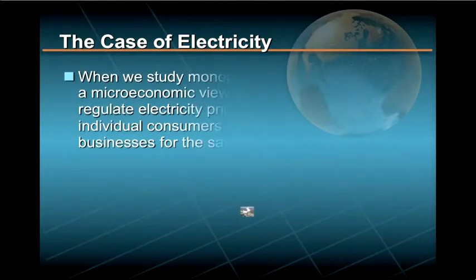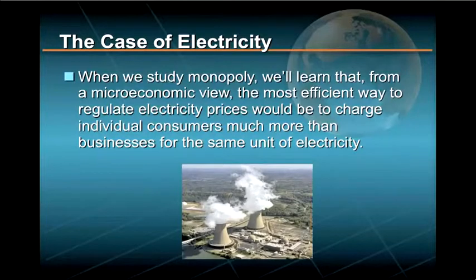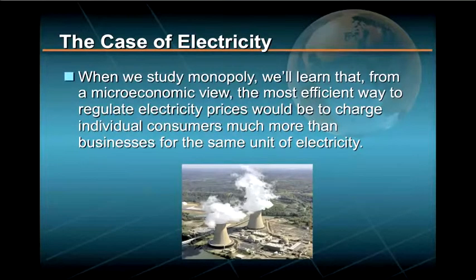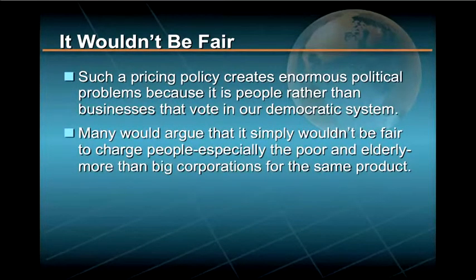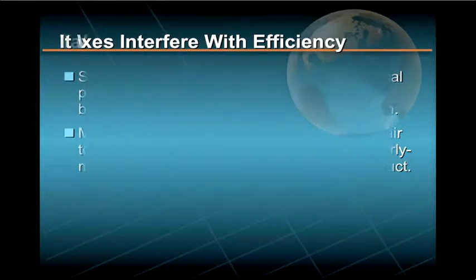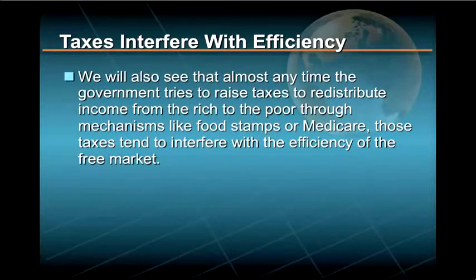Consider the case of electricity prices. When we study monopoly, we'll learn that from a microeconomic view, the most efficient way to regulate electricity prices would be to charge individual consumers much more than businesses for the same unit of electricity. However, such a pricing policy creates enormous political problems because it is people rather than businesses that vote in our democratic system. Moreover, many would argue that it simply wouldn't be fair to charge people, especially the poor and elderly, more than big corporations for the same product. In a similar vein, we will also see that almost any time the government tries to raise taxes to redistribute income from the rich to the poor through mechanisms like food stamps or Medicare, those taxes tend to interfere with the efficiency of the free market.